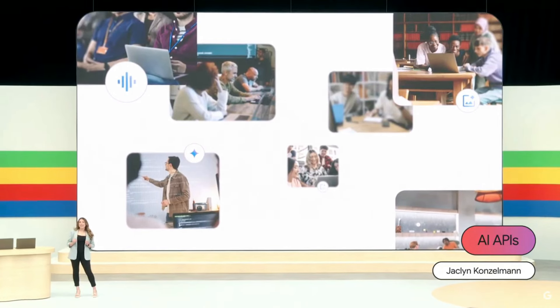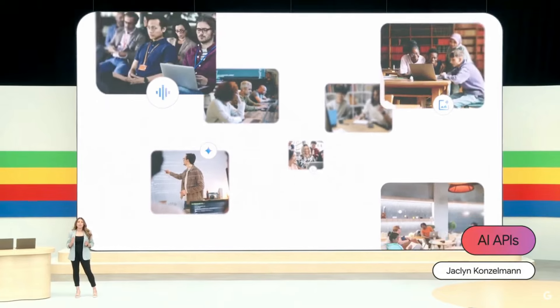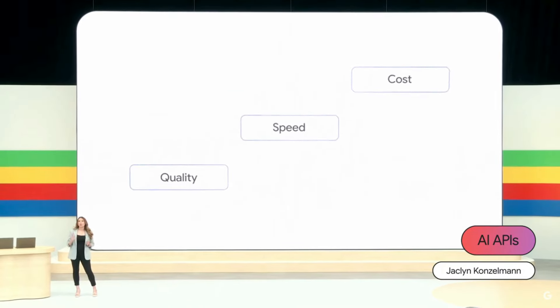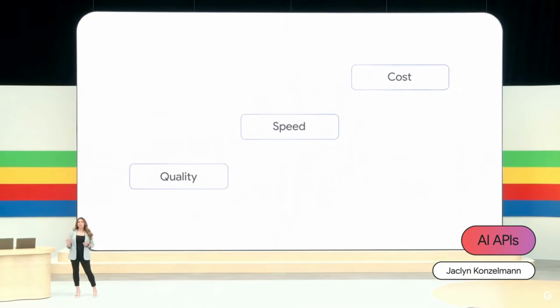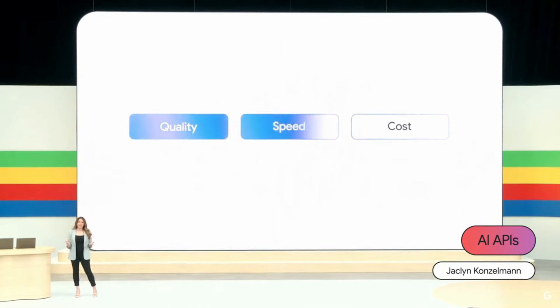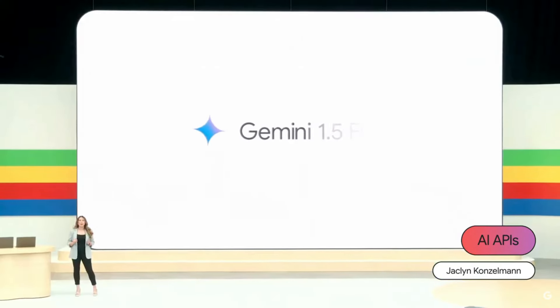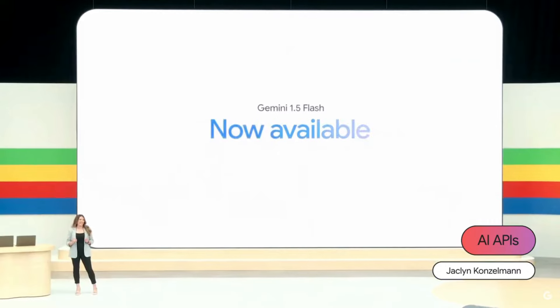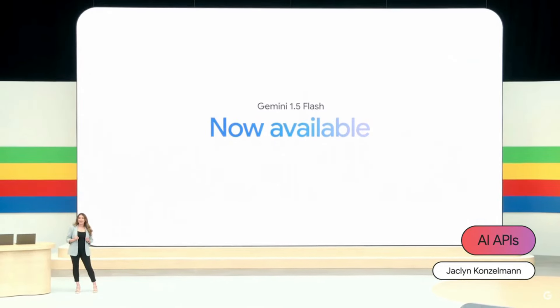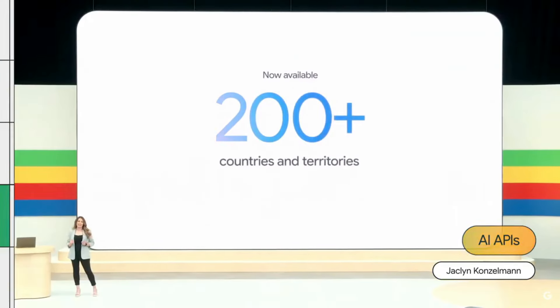Selecting the right AI model for your needs requires a balance across quality, cost, and speed. That's why I'm thrilled that Gemini 1.5 Flash is officially open to all developers to start building with today. You can get started using the Gemini API in Google AI Studio, which is now available in more than 200 countries and territories.